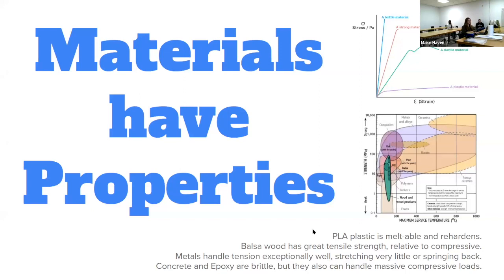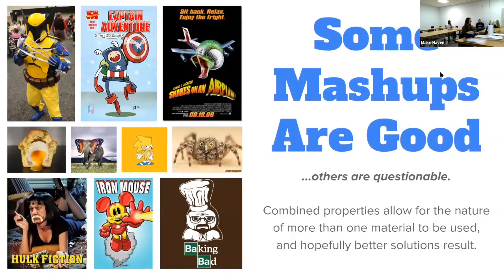So the curves over here on the right side are all related to material properties. There are all sorts of interesting things to consider — balsa wood, for example, will crumble in your hand without any real effort, but if you could hang from a stick of balsa wood you could probably hold my weight. They're really good at tension but really garbage at compression or cross forces. That's exactly what Julia was saying.